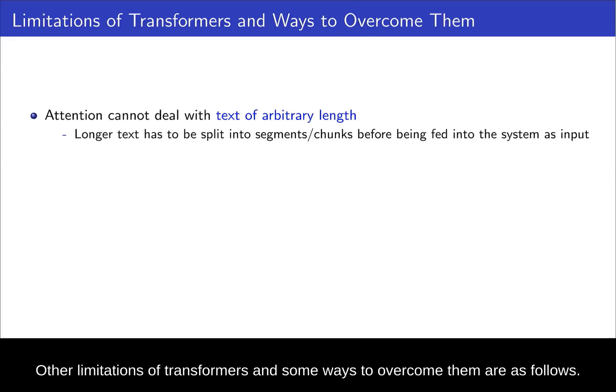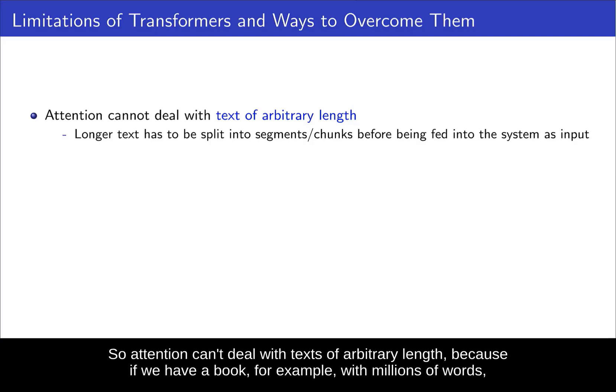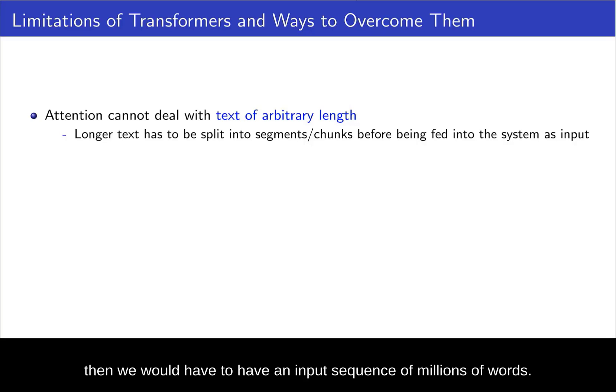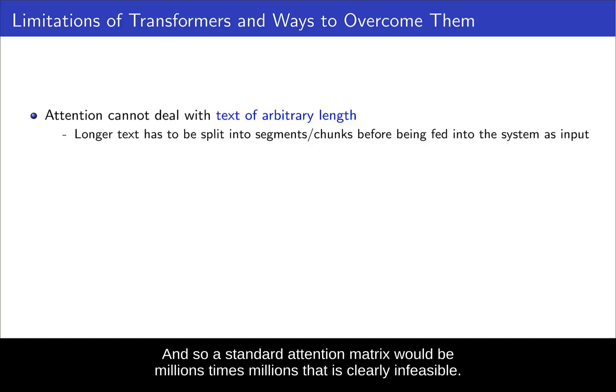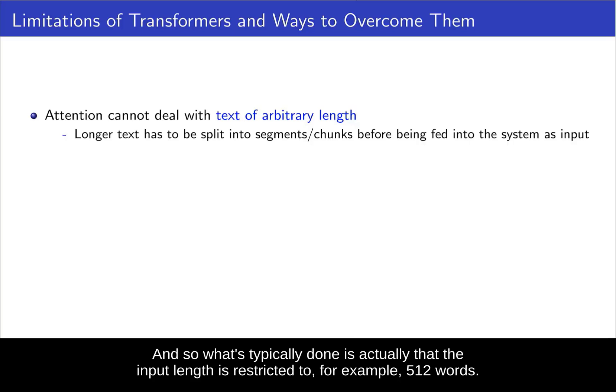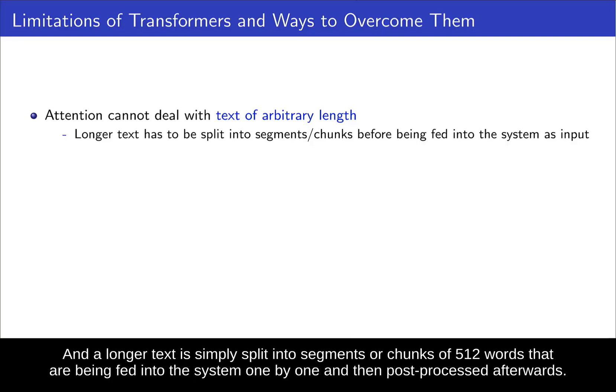Other limitations of transformers and some ways to overcome them are as follows. So attention can't deal with text of arbitrary length. Because if we have a book, for example, with millions of words, then we would have to have an input sequence of millions of words. And so a standard attention matrix would be millions times millions. That is clearly infeasible. And so what's typically done is that the input length is restricted to, for example, 512 words. And a longer text is simply split into segments or chunks of 512 words that are being fed into the system one by one and then post-processed afterwards.